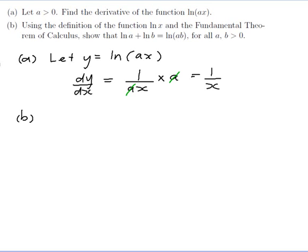Now let's do part b. It says to use the definition of ln(x), so I should write down what that is. ln(x) is equal to the integral from 1 to x of 1 on t, dt. That's the definition of ln(x). The fundamental theorem of calculus says that if I know an antiderivative, all I need to do is evaluate it from 1 to x.